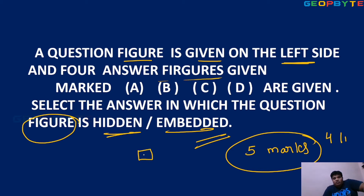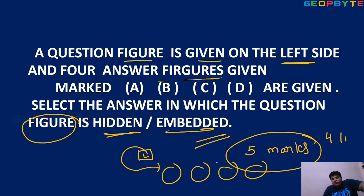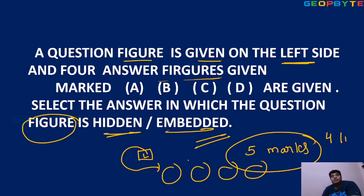Here, one question figure is given — suppose one line is given. Four options A, B, C, D are given. This part is hidden in one of the four options. You need to find which option is the right answer. Concentrate and practice well.